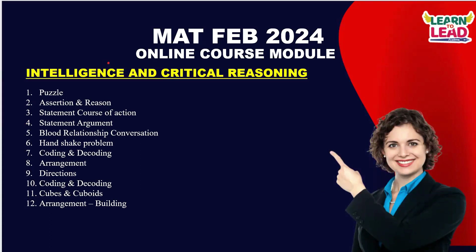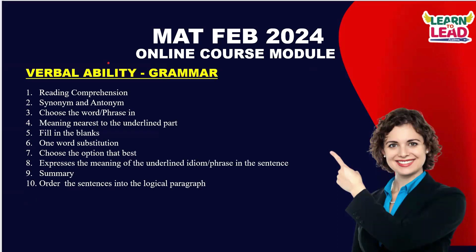Under the intelligence and critical reasoning section, the topics you need to cover are: puzzles, assertion and reasoning, statement and courses of action, statement and argument, blood relationship, conversation type, handshake problems, coding and decoding, arrangement, directions, cubes and cuboids, and arrangement based on buildings. There are about 11 topics and questions are repeated from these topics, so be thorough with all of them.